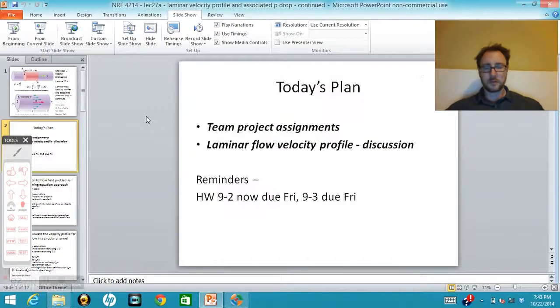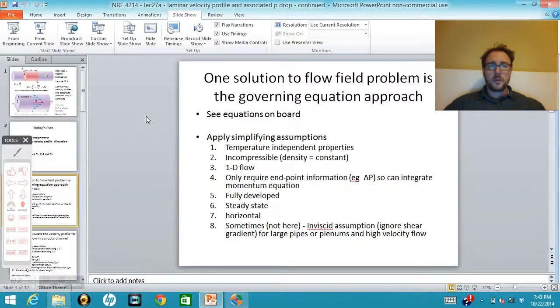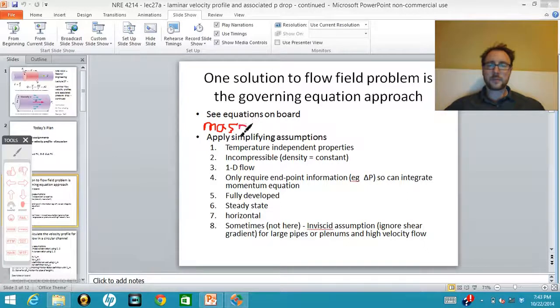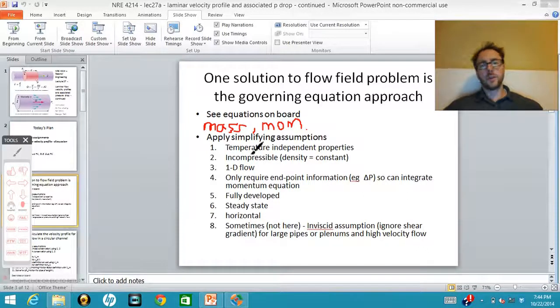What we did last time is we had two equations on the board, one for mass and one for momentum. We wrote those out in the very general form and applied a number of simplifying assumptions. During the last class we assumed the properties were independent of temperature, allowing us to ignore the energy equation. We assumed the fluid was incompressible so it had a constant density.